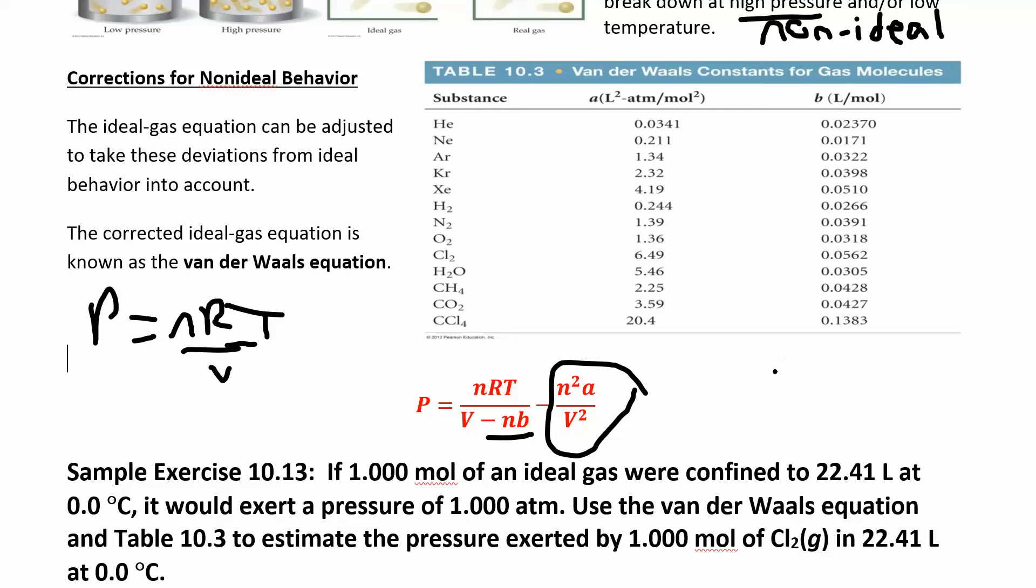This NB part is correcting for the fact that you no longer have zero volume. The molecules are actually taking up some space in the container. So the entire volume is not free for every molecule to move around in. It's actually less than that because the molecules are taking up space.